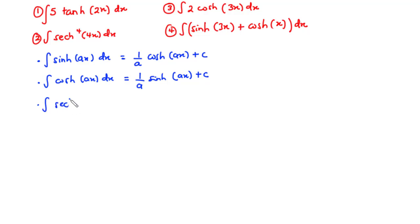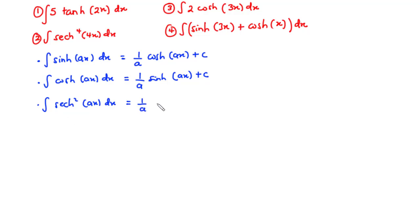The integral of sech squared ax dx is equal to — you are going to have 1 over a. Whenever you integrate sech squared, you are going to have tanh. So you have 1 over a times tanh ax plus c.